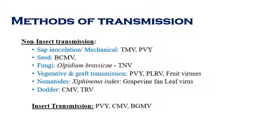The methods of transmission of plant viral disease are mainly divided into two categories: non-insect transmission and insect transmission. This split exists because most plant viral diseases are transmitted by insects, while non-insect transmission may account for only about five to ten percent. We will now see each category one by one.